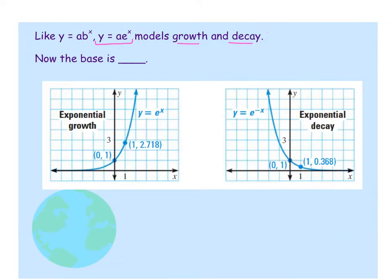If x is positive, or has a positive out in front, then you know your graph is going to model a growth function. The tradeoff is, if x has a negative in front, then that is going to represent a decay model for base e.